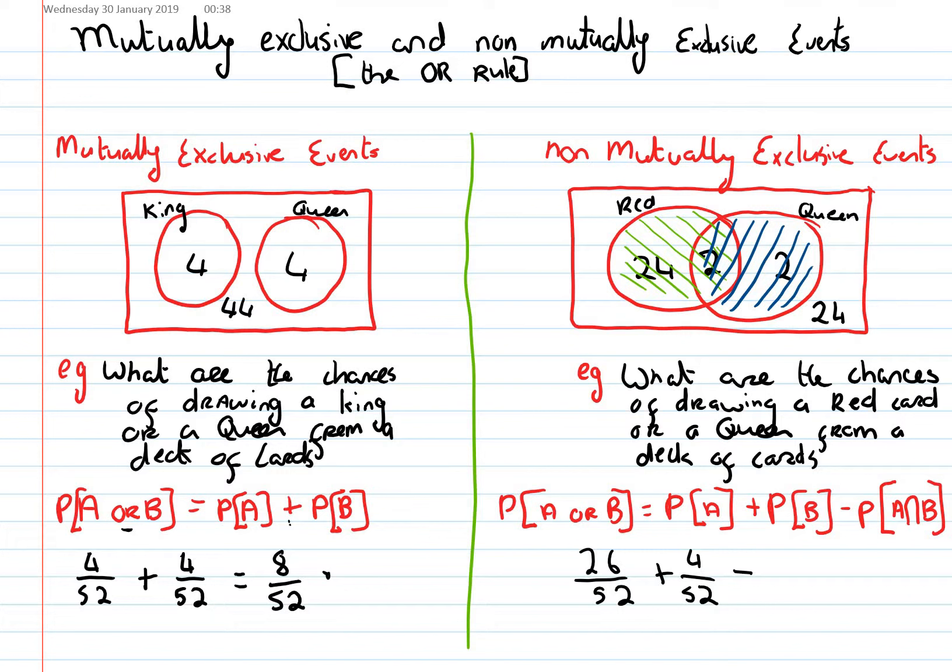So, I am going to have to take away the probability of A intersection B and A intersection B is this bit here. So, I'm going to take away 2 out of 52. The book often says and there but for the sake of clarity now we are going to go intersection.